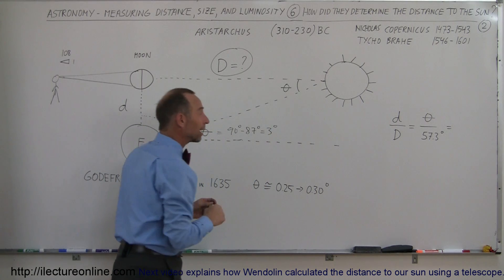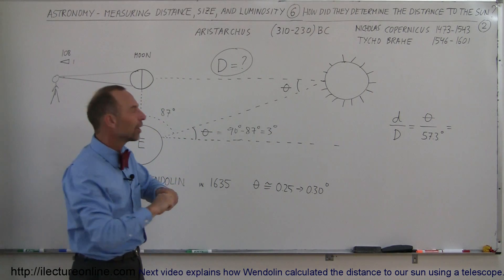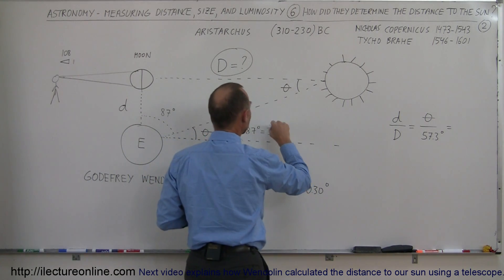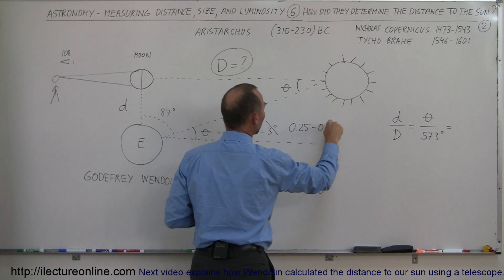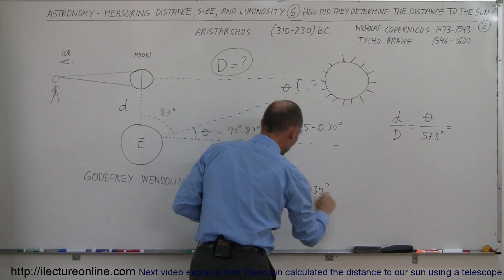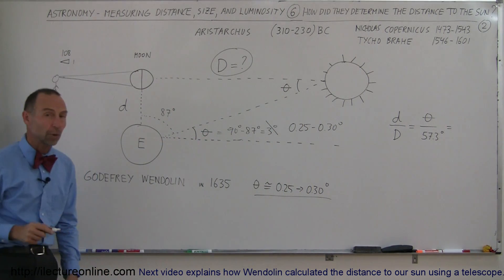When he made the measurements, instead of coming up with a three degree angle, he came up with an angle that was less than one tenth that much, an angle of about 0.25 to about 0.30 degrees. That was the new angle based upon his measurements with the telescope.